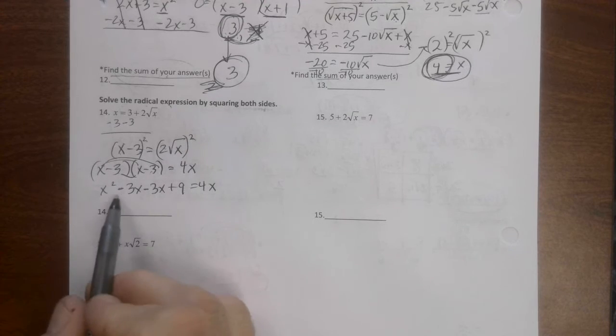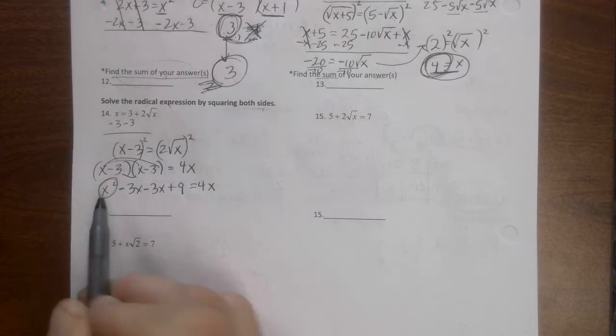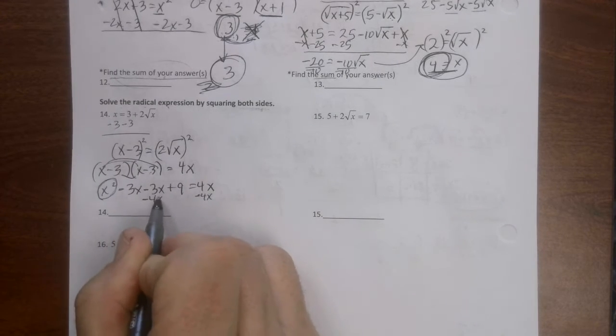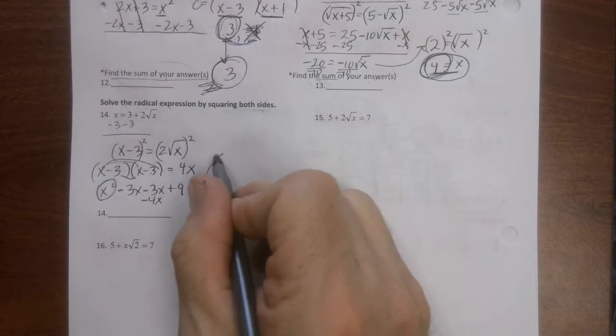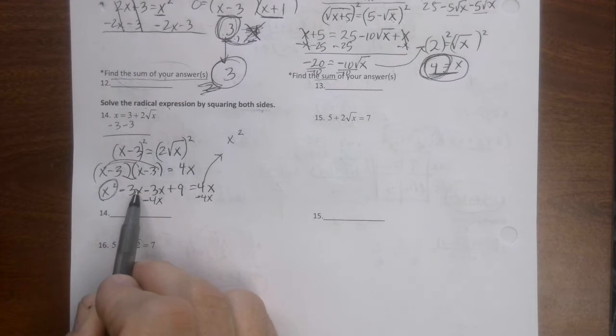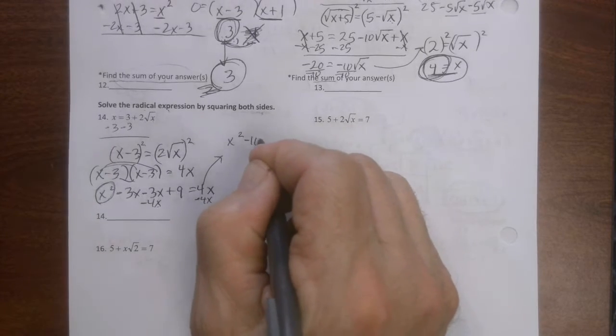Outside is negative three x, inside is negative three x, negative three times negative three is nine equals four x. Remember when we're dealing with trinomials we want to keep our squared term positive, so I'm going to subtract four x from both sides and clean this whole mess up. We get x squared negative three x negative three x is negative six x minus four x is negative ten x plus nine equals zero.